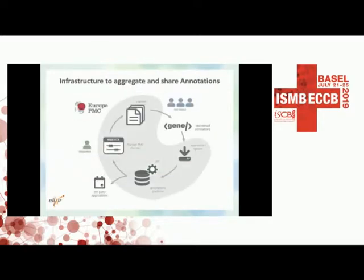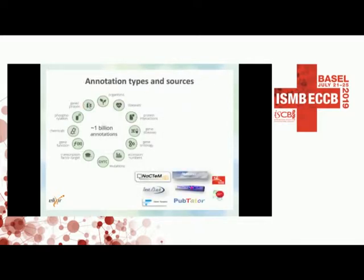The annotation platform has infrastructure around it that supports it. A text mining group could share their annotations with us via the submission system. It gets integrated to the annotation platform, and then from there we share it via the API. Europe PMC also uses the API to highlight all the annotations mentioned in a given article on the Europe PMC website. Currently, we have close to a billion annotations across different annotation types — for example, diseases and protein-protein interactions. Although the content is predominantly text mining annotations, we also have curated snippets submitted to us; protein interactions are one of them.